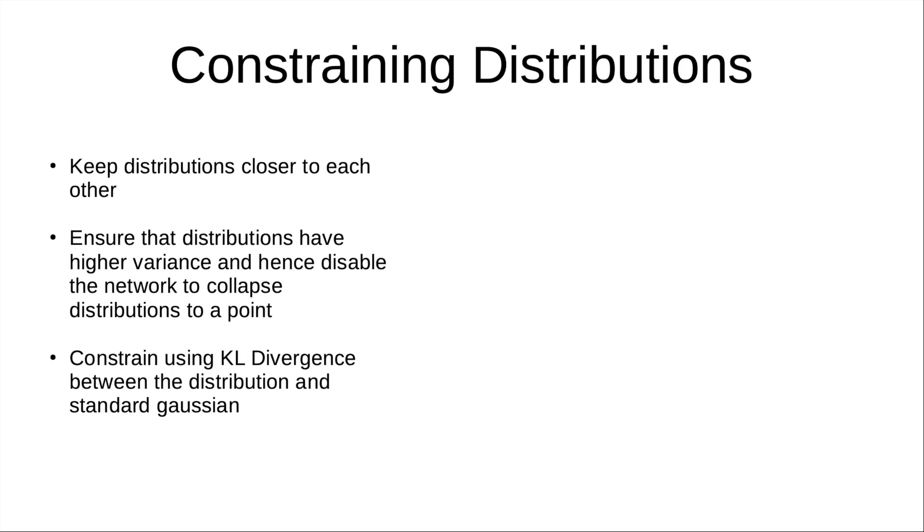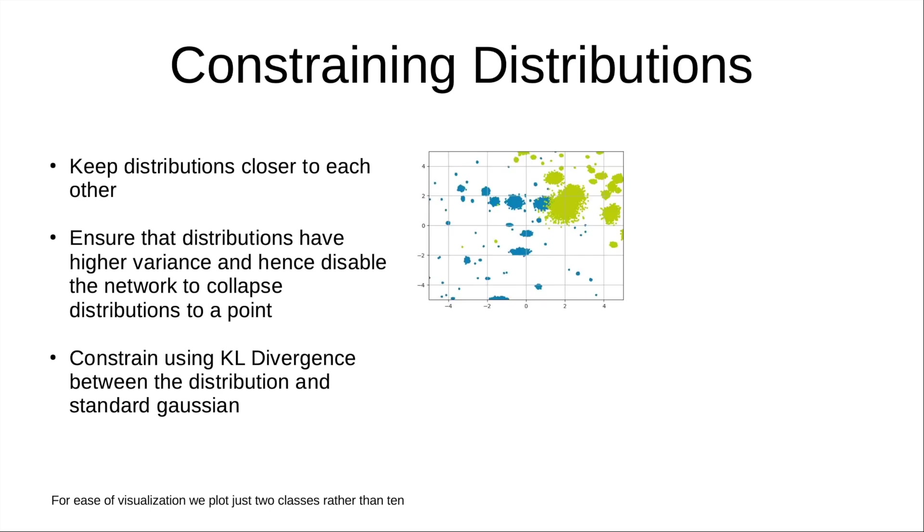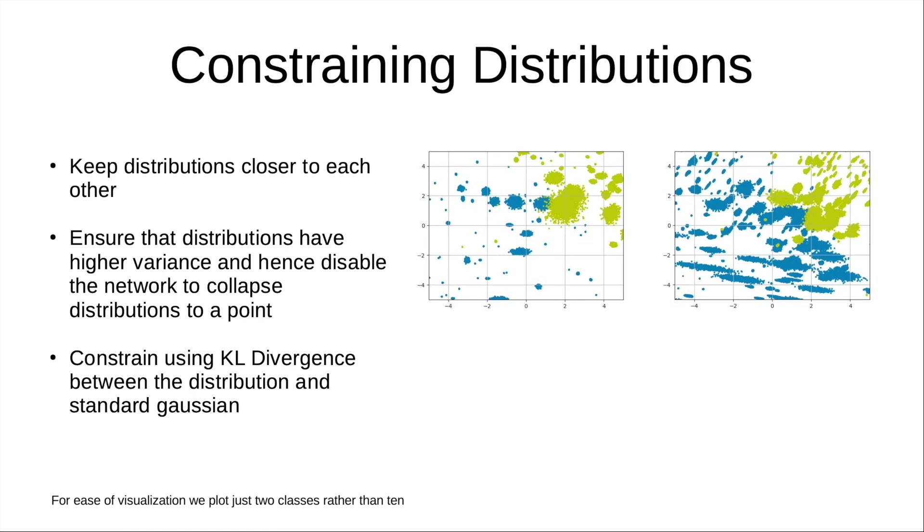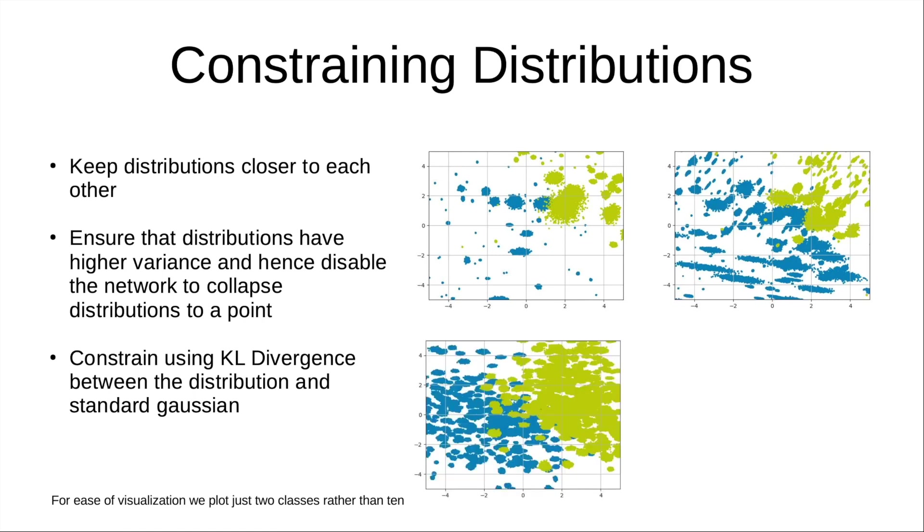To add this factor, we need to compute some sort of a distance metric between the distribution that encoder returns and standard Gaussian. We do this by computing KL divergence between these two, which is one such metric that captures what we want. I'll make sure to add links in the description where you can read more about it. Once we add this, we see that as we increase the relative importance of KL divergence as compared to reconstruction loss, our latent space distributions end up being wide enough and covering the entire space.